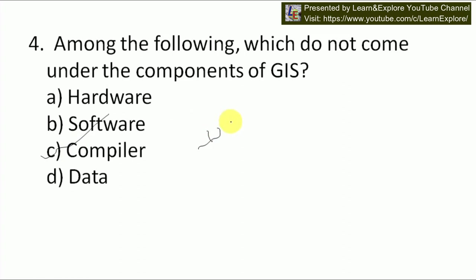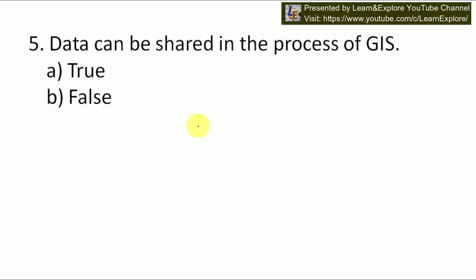Next question: data can be shared in the process of GIS. We have to justify this sentence. Data cannot be shared in the process of GIS, because the entire function of GIS involves developing a map or detailed analysis of an area, and this data can be analyzed but cannot be shared. Our answer will be B — false. This is one of the major drawbacks of GIS, that it cannot share data.